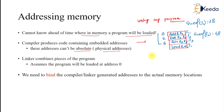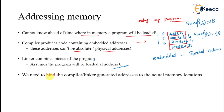These addresses are assigned by the compiler and are not absolute addresses. The word used in this case is embedded address or symbolic address. So that is symbolic address being attached. The linker combines pieces of the program and assumes that they will be loaded from memory address 0. We need to bind the compiler and linker generated addresses to actual memory locations.